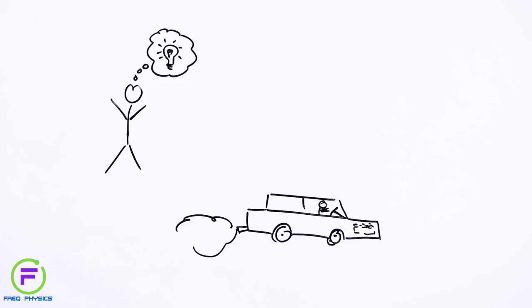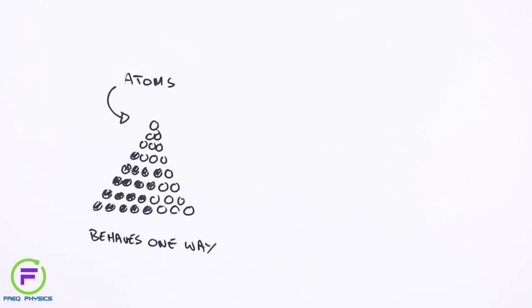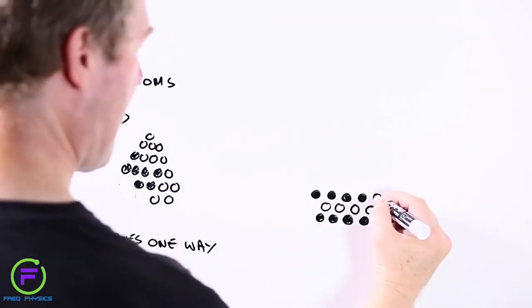Of course, atoms are a bit smaller than the wheels on a car, but the same idea holds. How the different atoms in something are arranged can affect things like how strong or how weak it is, or if it conducts electricity, or if you can see through it.